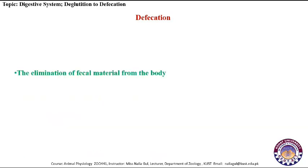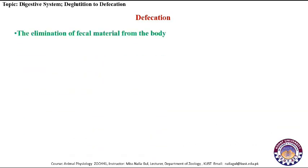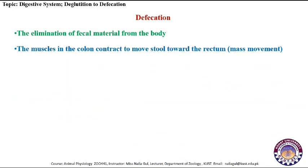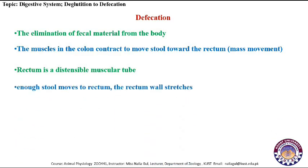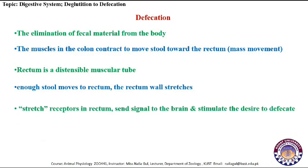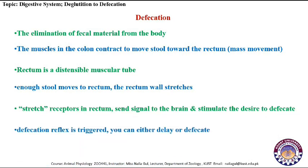The elimination of fecal material from the body is called defecation. The muscles in the colon contract and move the stool towards the rectum — this is known as mass movement. The rectum is a distensible muscular tube. When enough fecal material moves to the rectum, the rectal wall stretches. Special stretch receptors in the rectal walls send signals to the brain. After the defecation reflex is triggered, a person can either delay or proceed with defecation.